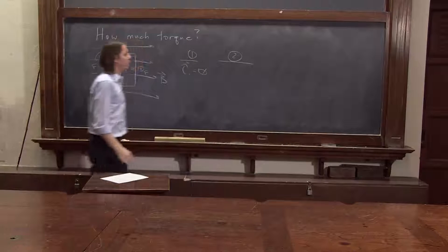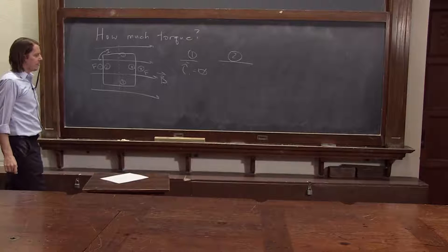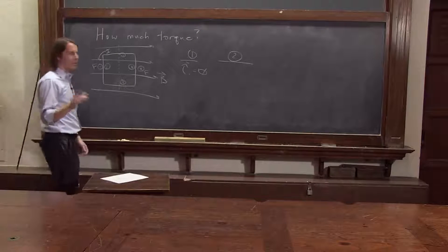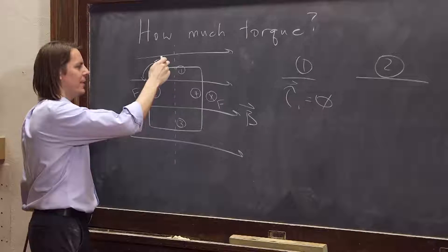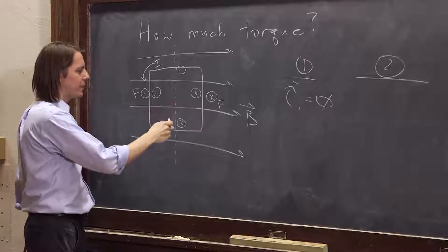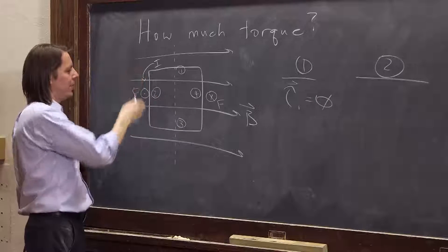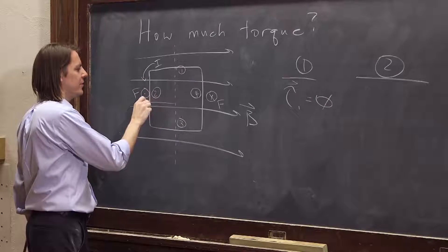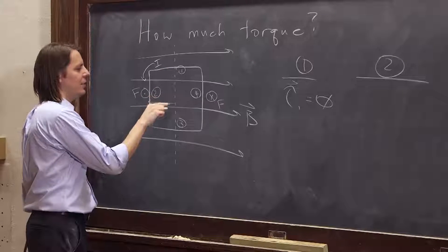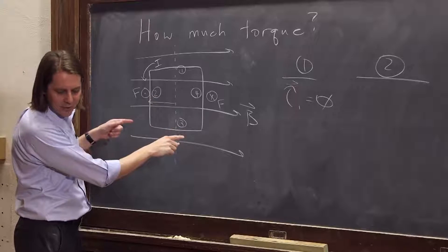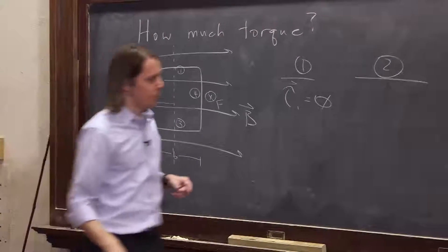Side two. R cross F. Okay. So R, let's think about what R is. R is the vector that goes from the axis of rotation to where the force is being applied. The force is being applied uniformly along this length. So it's that distance right there from the axis to that side. And we know what that is. That's half this length. And for the bottom, this was B. So that's B over two.